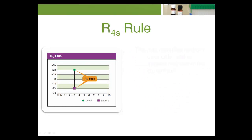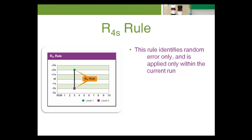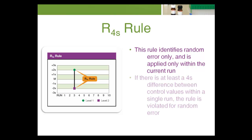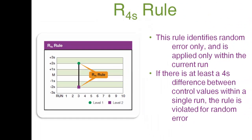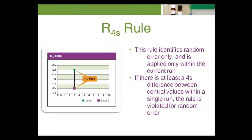The R4s rule identifies random error only and is applied only within the current run. If there is at least a 4s difference between control values within a single run, the rule is violated for random error. For example, assume both level 1 and level 2 have been assayed within the current run. Level 1 is positive 2.8s above the mean, and level 2 is negative 1.3s below the mean. The total difference between the two control levels is greater than 4s — e.g., plus 2.8s minus negative 1.3s equals 4.1s.